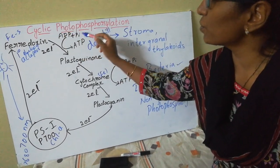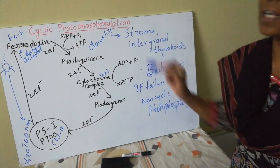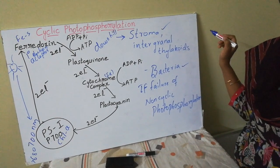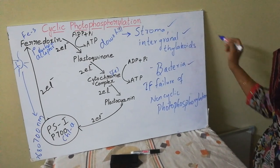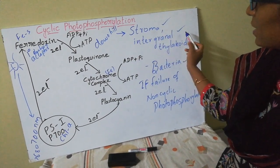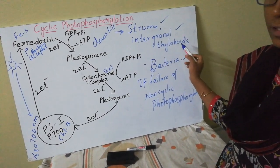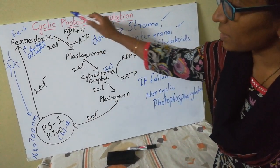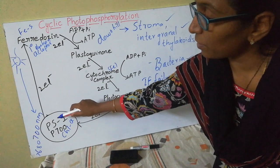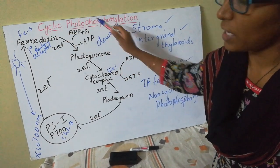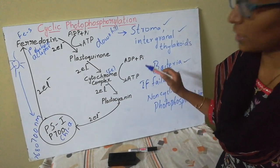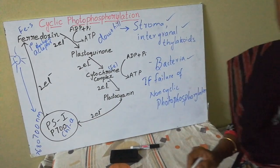Cyclic photophosphorylation occurs in the stromal region or intergranate thylakoids. The flow of electrons takes place in a cyclic manner — from the reaction center, the electrons travel through the carriers and are returned back to the same reaction center, to the same chlorophyll molecules.